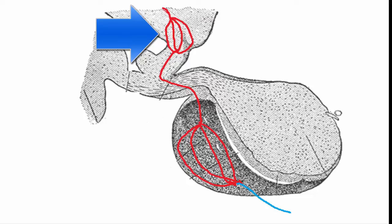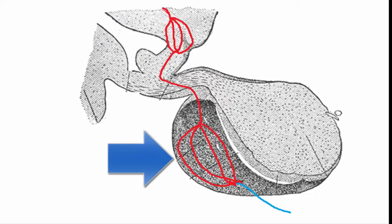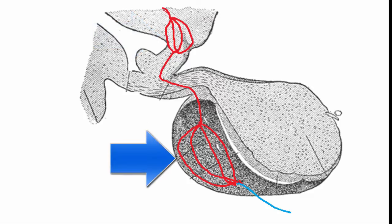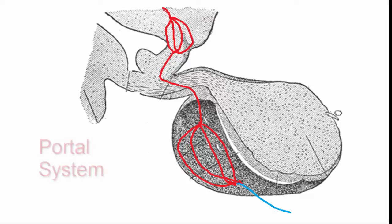These signaling hormones drain into a blood vessel which then leads directly to another capillary network in the anterior pituitary. This configuration of one capillary network draining directly into another is called a portal system — a very efficient way to get a signal from the hypothalamus to the anterior pituitary.